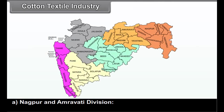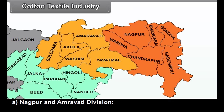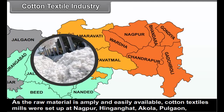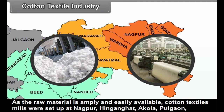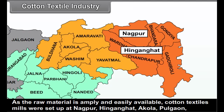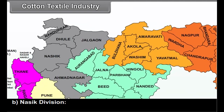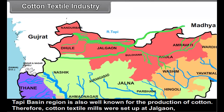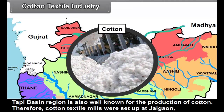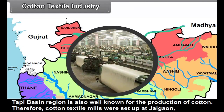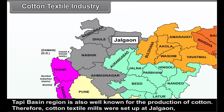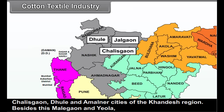Distribution of cotton textile industry: A. Nagpur and Amravati Division - As raw material is amply and easily available, cotton textile mills were set up at Nagpur, Hinganghat, Akola, Pulgao, Bhadnera and Achalpur cities of the Vidarbha region. B. Nasik Division - The Taapi Basin region is also well known for the production of cotton. Therefore, cotton textile mills were set up at Jalgaon, Chalisgaon, Dhule and Amalner cities of the Khandesh region.